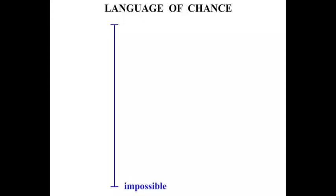Where down the bottom is impossible and up the top is certain. We can say that any chance is somewhere between an impossibility or a certainty. Now if something is impossible we might say it has no chance, or zero percentage.